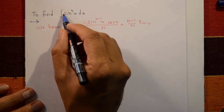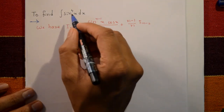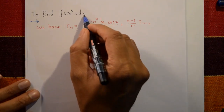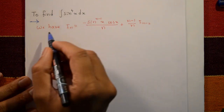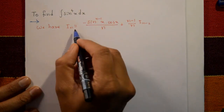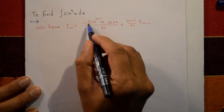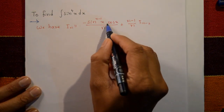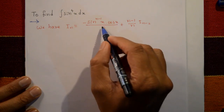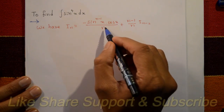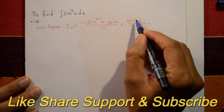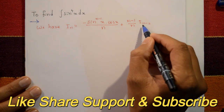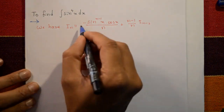To find the integration of sin⁴x with respect to x, we have the reduction formula: Iₙ = minus sin^(n-1)x · cos x divided by n, plus (n-1)/n · I_(n-2).